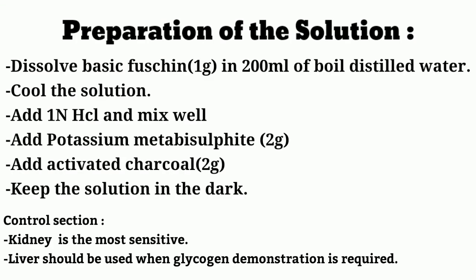Preparation of Schiff solution: dissolve basic fuchsin, pour 200 ml boiled distilled water, allow the solution to cool, then add 1N HCl and mix well, then add potassium metabisulfite 2 gram, then add activated charcoal 2 gram. Mix the solution in the dark overnight. The solution remains stable for use.